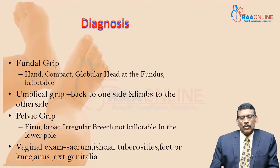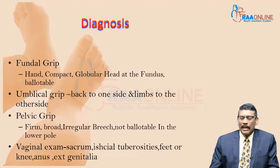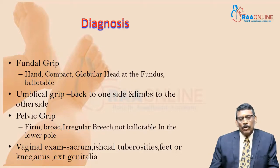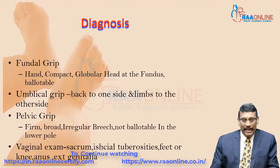On vaginal examination, you will find the sacrum, ischial tuberosities, feet or knee, anus, and genitalia, but only when the cervix is dilated to about three or four centimeters. If she is not in labor and the cervix is closed, a vaginal examination will reveal only a soft structure, felt through the fornices rather than the cervix, which is very different from the feel of a fetal head.